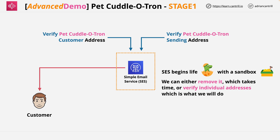In this stage of the mini-project, we're going to be adding the email addresses we'll be using during the rest of the project. I recommend having two different email addresses — one that the application will send from, and one that the reminders will be sent to. Let's go ahead and get those configured in the AWS console.